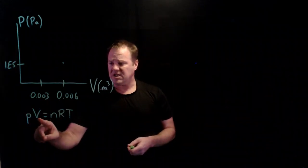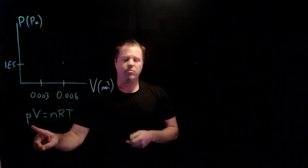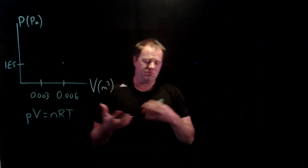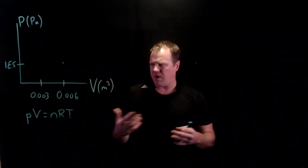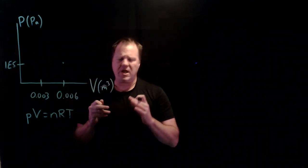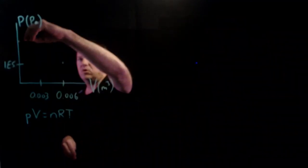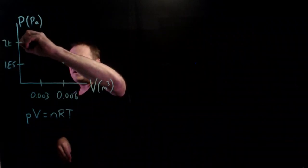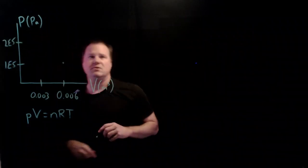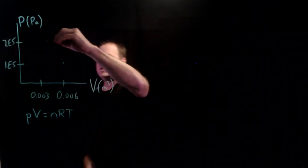But the volume gets cut in half, so the pressure has to double. We could do some algebra and calculate it, but I don't think that's necessary. If we cut the volume in half for an isothermal process, we're going to double the pressure. So we end up with about two atmospheres or 200,000 pascals. So we end up right here.